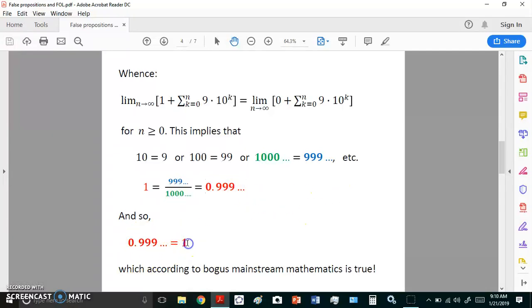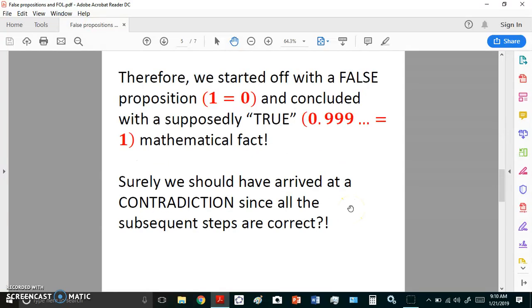And so, we arrive at a supposedly true result, which, according to mainstream mathematicians, is a fact. So, we started off with a false proposition, did everything right, and we result at not a contradiction, but something which mainstream academia thinks is correct. This is pretty interesting, and surely we should have arrived at a contradiction, since all the subsequent steps are correct. Well, we didn't. So, what does that tell us?